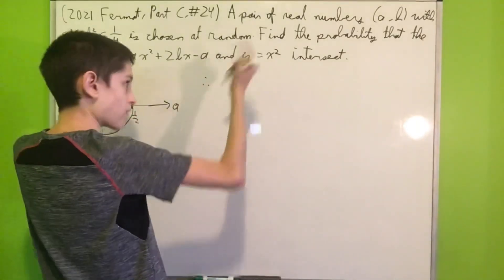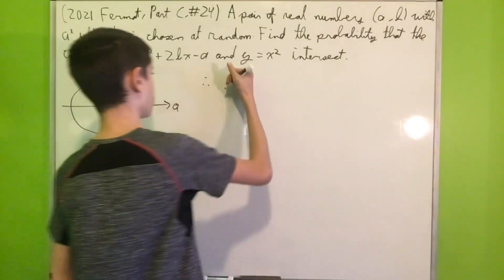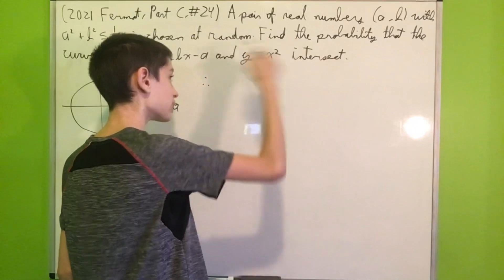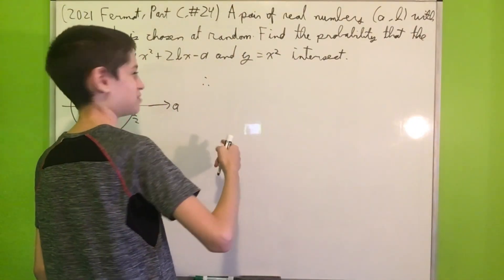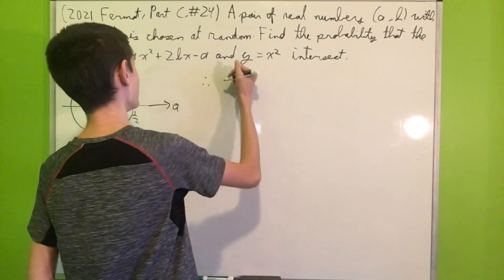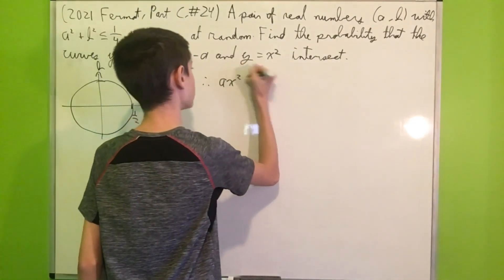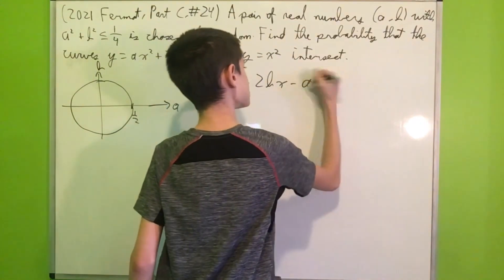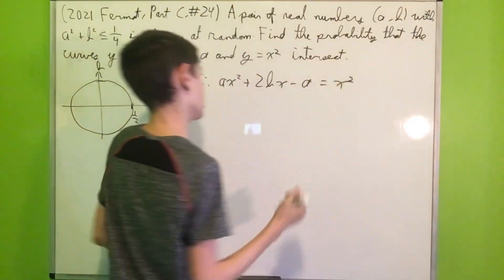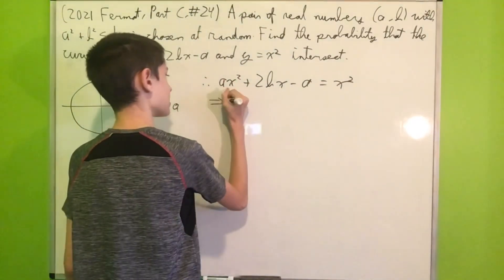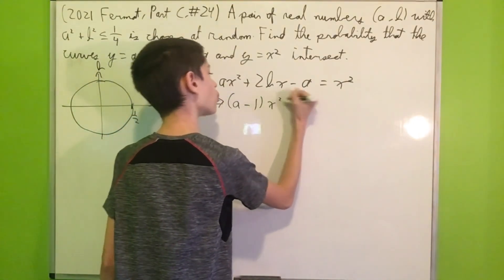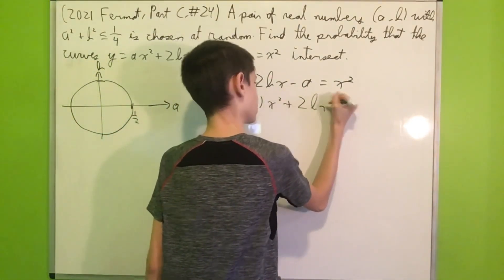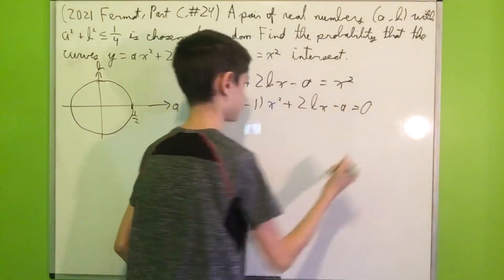So we want that the y values will be equal, so we can say the y's equal to each other. I'm losing my words, it's been a while since I made a video as you can see. So we have ax² + 2bx - a = x². Bring the x² to the other side and factor, we have (a - 1)x² + 2bx - a = 0.